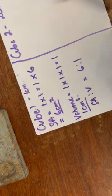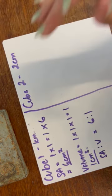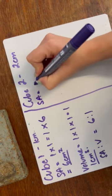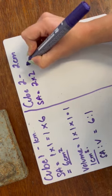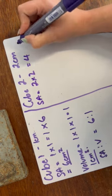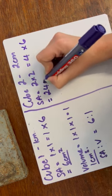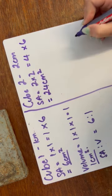Now, if I have a cube that is two centimeters long, my surface area is going to be two times two, which is four. And I'm going to multiply that by six because I've got a cube again and that equals 24 centimeters squared.